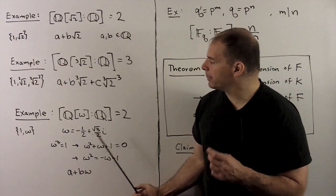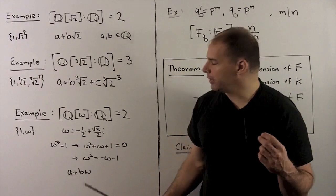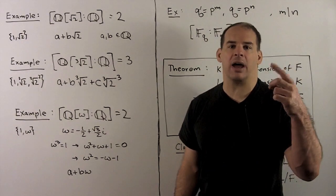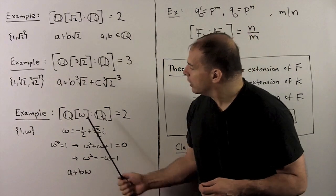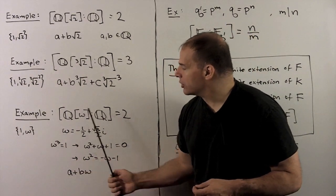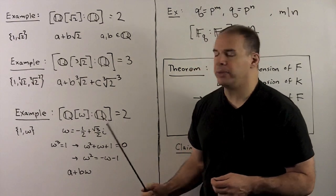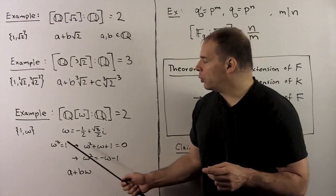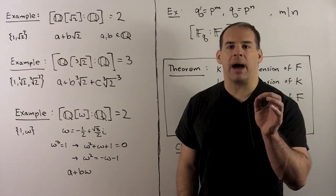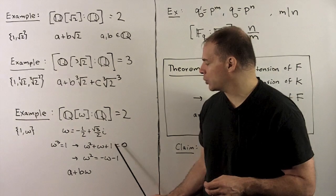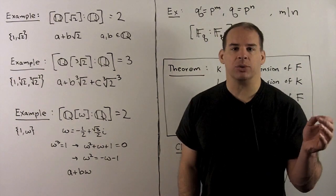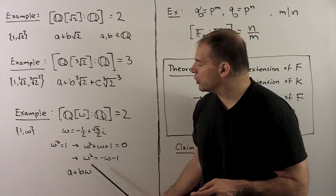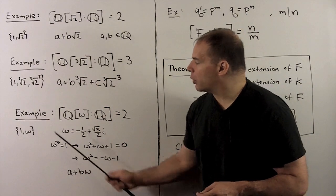For an example with a complex number, let's try Q adjoin ω, where ω is the cube root of unity given by −½ + (√3/2)i, i.e., e^(2πi/3). The basis here is {1, ω}, so the degree over the rationals is 2. We have ω³ = 1 and ω ≠ 1, so we can divide ω³ − 1 by ω − 1 to get ω² + ω + 1 = 0, or ω² = −ω − 1. Therefore, any linear combination in powers of ω over the rationals reduces to A + Bω, so {1, ω} gives a basis.